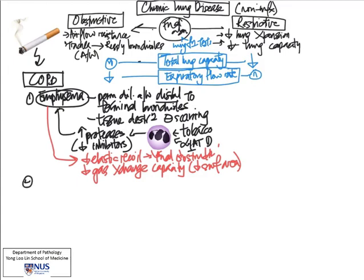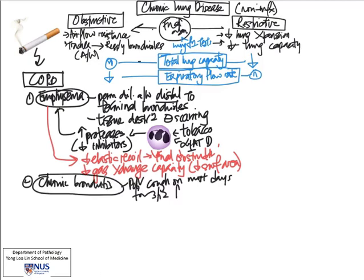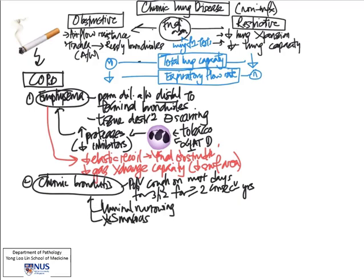The next entity is chronic bronchitis, which in contrast to emphysema involves the larger airways. This has a clinical definition: chronic bronchitis is defined as a productive cough occurring on most days for three months for at least two consecutive years. What happens is narrowing of the lumina of the airways and excess mucus production, giving rise to mucus plugging. Together, these result in an obstructive picture.